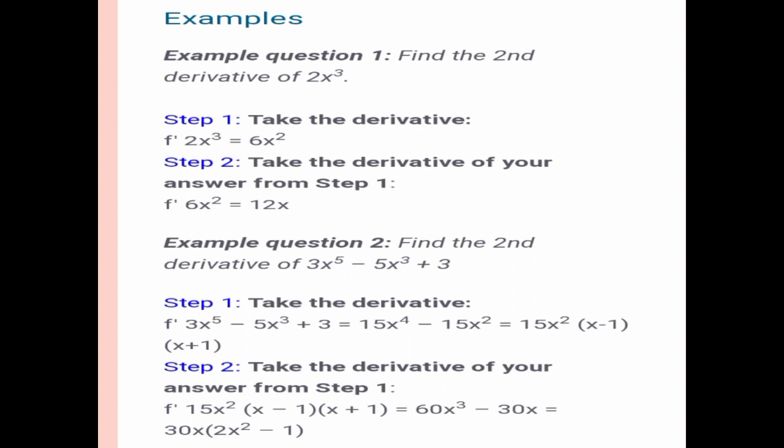This is now the second step to find the second derivative. So, 15x² times the quantity of (x - 1) times x times the quantity of (x + 1).